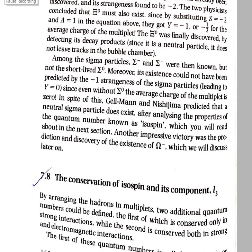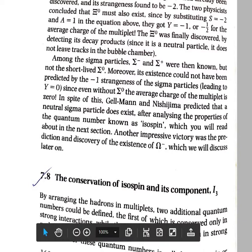A number that is very important for particle physics is isospin. We are discussing the conservation of isospin and its component I3. These are two quantum numbers: isospin and its third component I3. Isospin is otherwise called isotopic spin, denoted by the letter I.